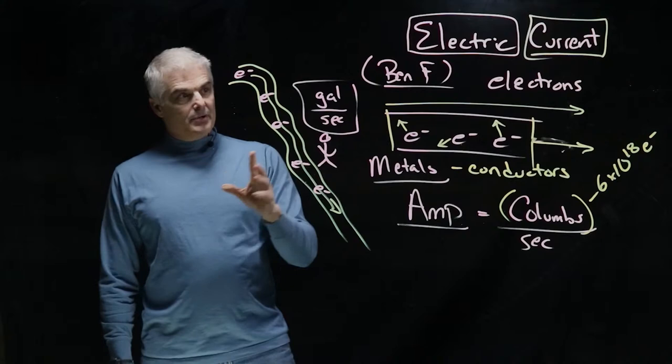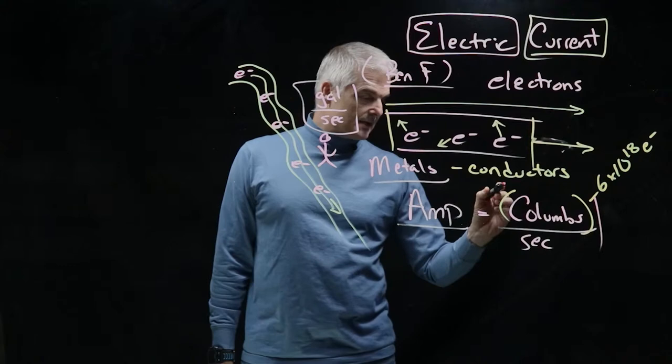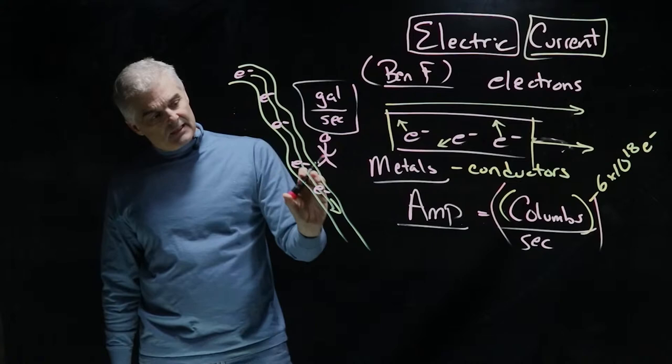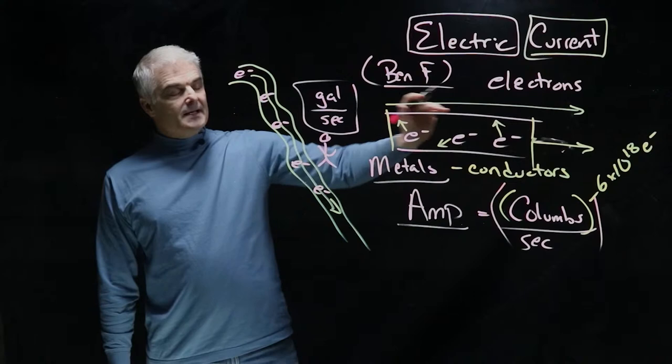So coulombs per second measures amps. What's current? Current, if you will, is the speed at which the electrons move through a wire.